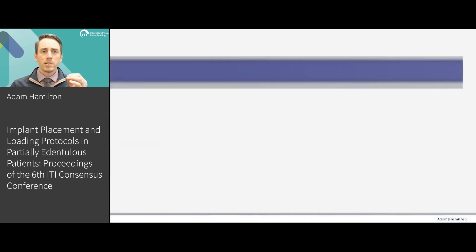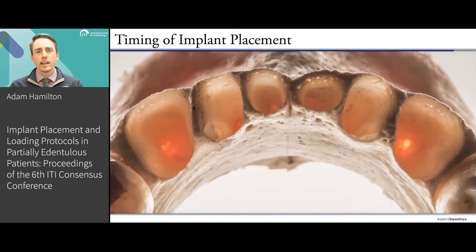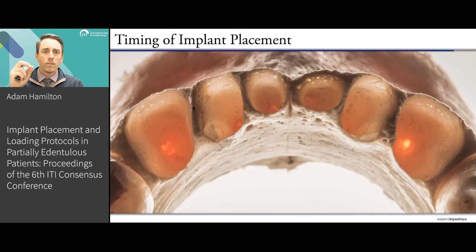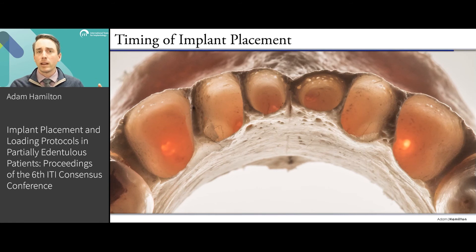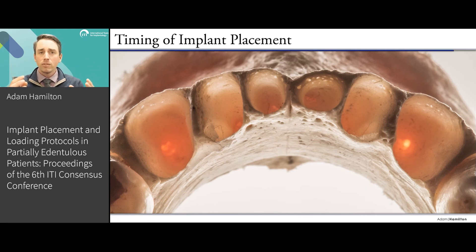Let's start to look at things. What you're seeing here is a mandibular arch and several extraction sockets. Try to imagine after extraction of a tooth — what are the factors that you would consider when it comes to placing an implant in these sockets? Would you consider doing immediate implant placement? Do we find there's available anatomy to do that?